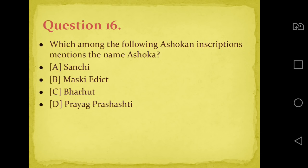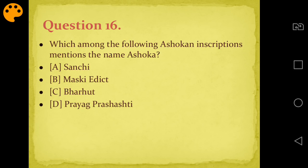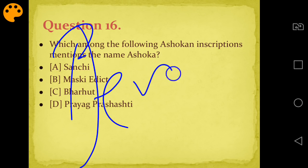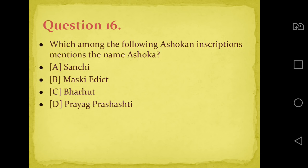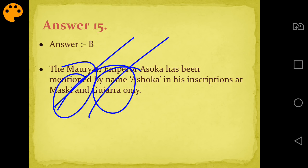Question sixteen: Which Ashokan inscription mentions the name 'Ashoka'? Options are Sanchi, Maski, Bharhut, or Prayag Prashasti. Answer is B - Maski edict. Remember: only two edicts refer to Ashoka by name 'Ashoka' - Maski and Gujra. In all other places, he is referred to as 'Devanampiya Piyadasi'. Even in the Prayag Prashasti, he is called Devanampiya Piyadasi, not Ashoka.